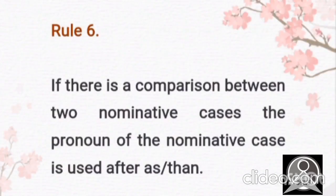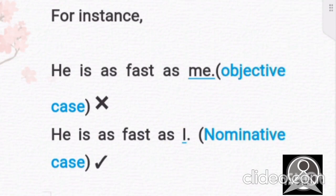Now let's talk about the sixth rule. It says, if there is a comparison between two nominative cases, the pronoun of the nominative case is used after as or than. For instance, he is as fast as me. Here, me is the objective case, which is actually wrong. You don't have to say this. You have to say, he is as fast as I. Because I is the nominative case and you have to put the nominative one when we are comparing two nominative cases.